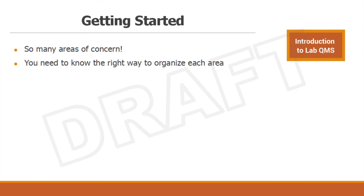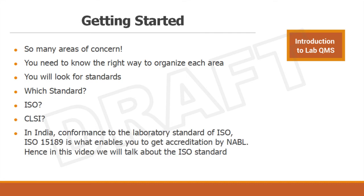You need to organize each aspect, each area of concern in the right way and hold everything comprehensively together through a quality management system. We need a standard to guide you through the process, and the best place to look is the International Standardization Organization or ISO. ISO has a standard ISO 15189 which enables you to get even accreditation by NABL. In India, conformance to the laboratory standard ISO 15189 is what gets you NABL accreditation.